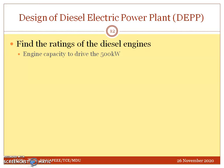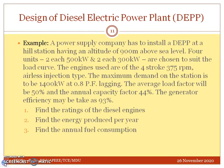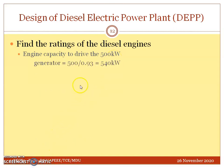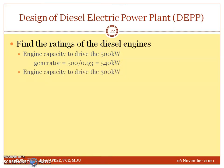For the engine capacity to drive the 500 kilowatt alternator: the required generator output is 500 kilowatt, so the input energy required is output divided by efficiency — 500 divided by 0.93 gives approximately 540 kilowatt. Similarly, for the 300 kilowatt machine, the input required is 300 divided by 0.93, giving approximately 322 kilowatt.